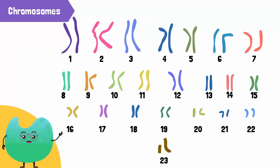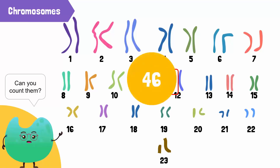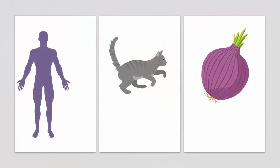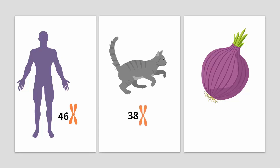Look at this picture of human chromosomes. Can you count them? Each strand is a chromosome, so together there are 46 chromosomes in humans. The number of chromosomes varies for different species of animals and plants. Humans have 46 chromosomes, cats have 38 chromosomes, and onions have only 18.